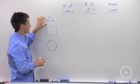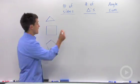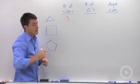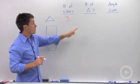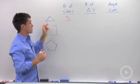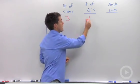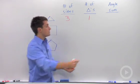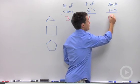So let's start with the triangle. Well, a triangle has three sides, so I'm going to write three in for the number of sides. The number of triangles, well, this is just one triangle. And we remember that the angle sum of a triangle is always 180 degrees.